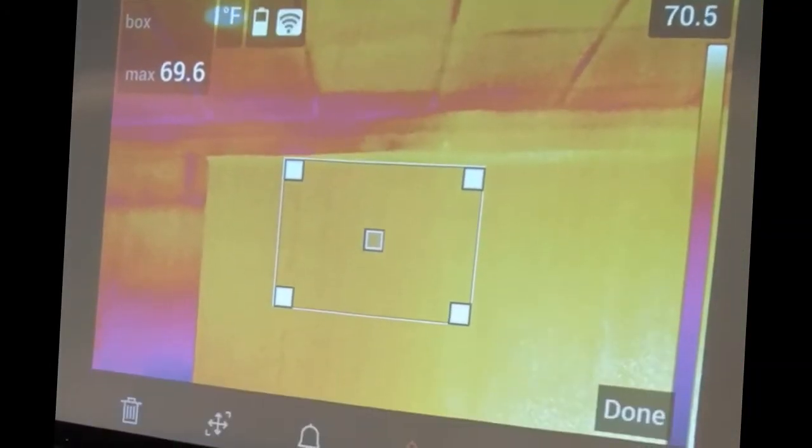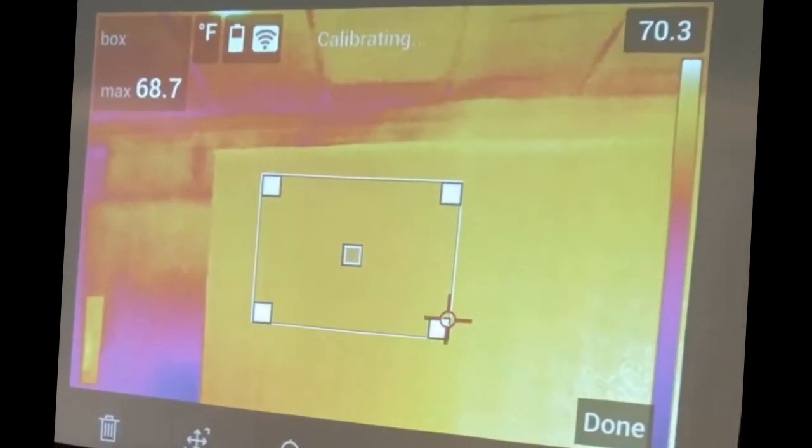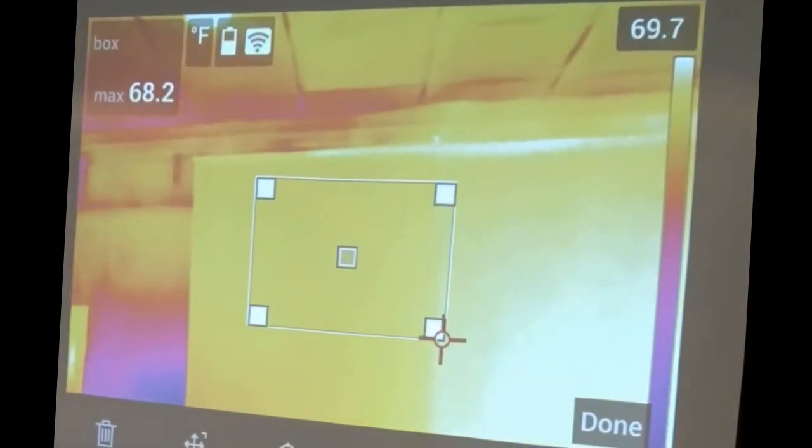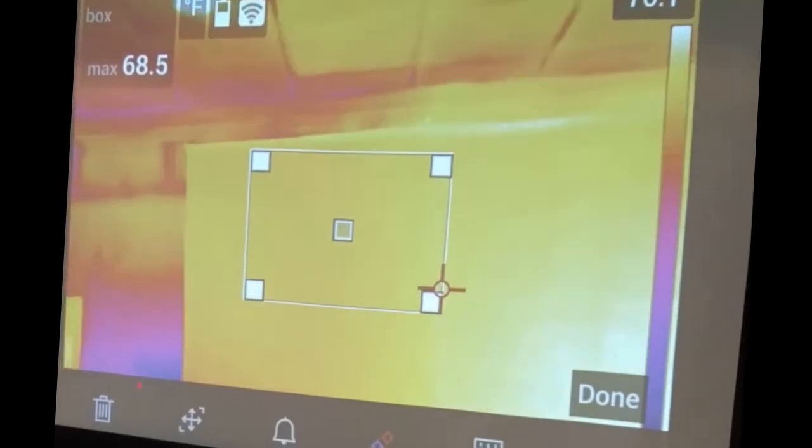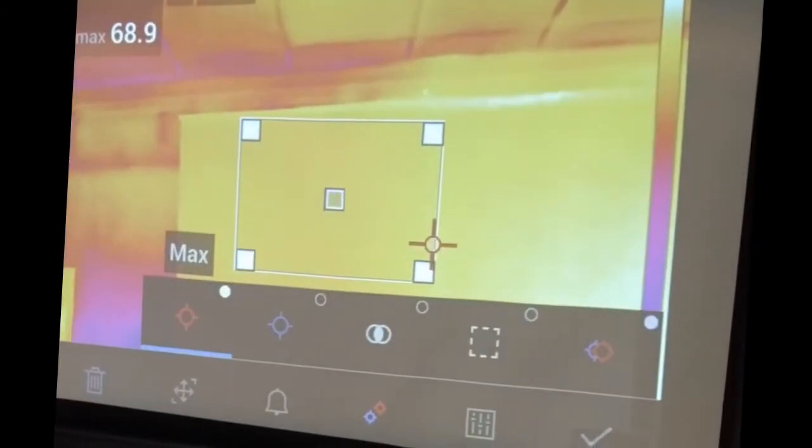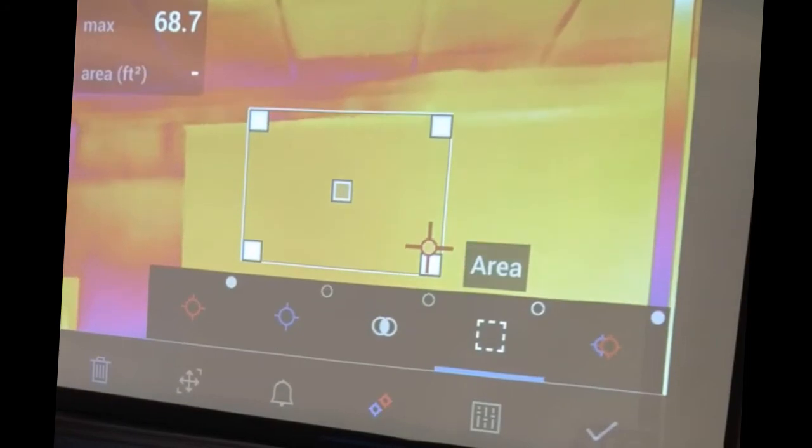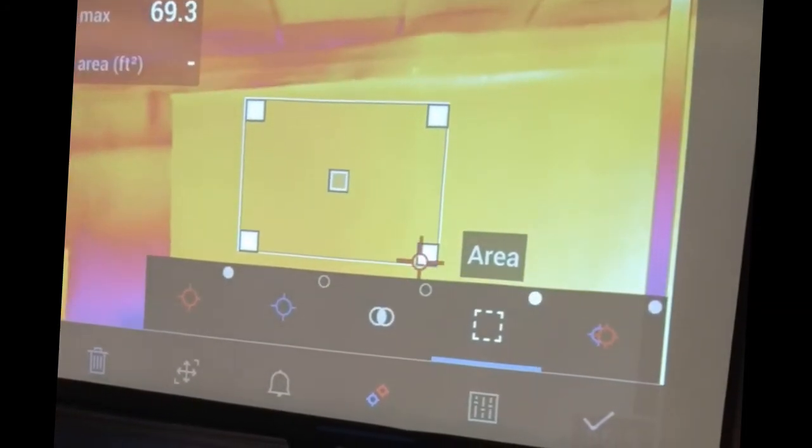When you hold your finger on the corner of the box, it's going to prompt you and you're going to get a new menu on the bottom. So I'm going to push the little red and gold symbol right down there, select area box, and tap it.